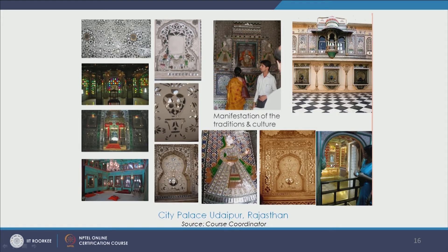Again here we see a lot of mirror and glass work — this is also quite intricate detail. We see all that, and along with these space making elements and craft forms that enhance them, there is also a very evident manifestation of tradition and culture that comes through stories and motifs. The forms and designs — like the gods and the peacock we see — all symbolize and give traces of the tradition and culture being followed by the people there.